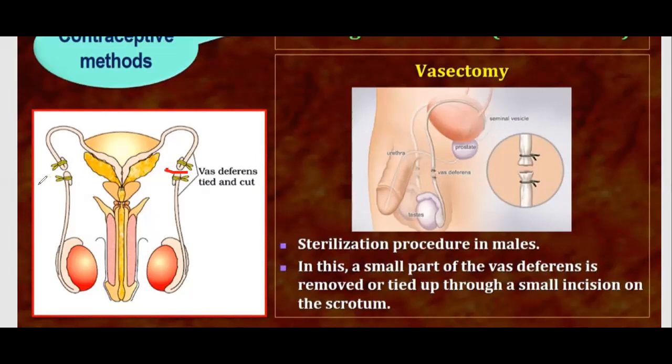Vasectomy is a sterilization procedure in males. In this, a small part of the vas deferens is removed and tied up through a small incision on the scrotum. This blocks the transfer of sperm, which prevents pregnancy.